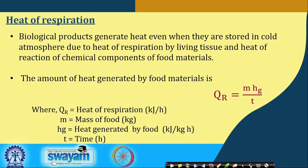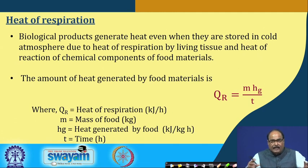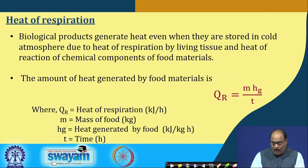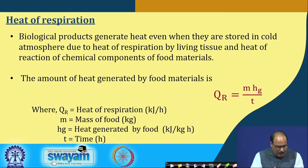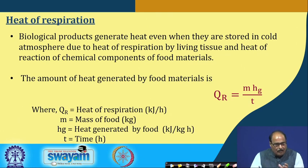The heat of respiration: all biological materials, when put in the storage facility even in cold atmosphere, generate heat due to respiration. There are also certain chemical reactions which undergo inside the material which also produce heat. The amount of heat generated by the food material QR may be equal to M·Hg / t, where M is the mass of the food, t is the time, and Hg is the heat generated by the food in kilojoules per kg per hour. From this one can find out the heat of respiration or total heat of chemical reactions.